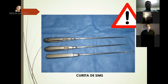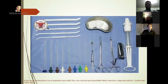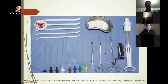Se inicia equipando la mesa de trabajo partiendo de la premisa de la metodología de no tocar, orientada a mantener la asepsia de los instrumentos que van a entrar en contacto con la paciente, especialmente con la cavidad uterina, a fin de evitar complicaciones. Los insumos necesarios son: los dilatadores de Hegar, las cánulas flexibles de Kalman, la jeringa para colocar la anestesia, la pinza de Posi o doble Z, la pinza de Foerster o de Aro, el espéculo de Graves y el aspirador.